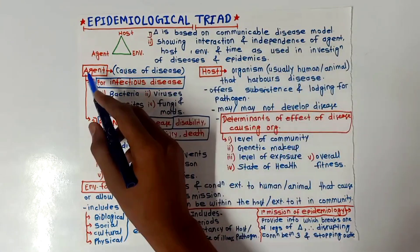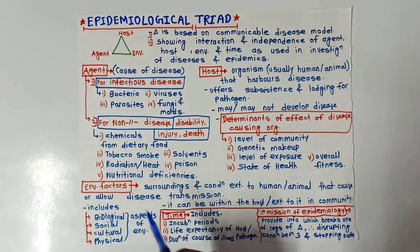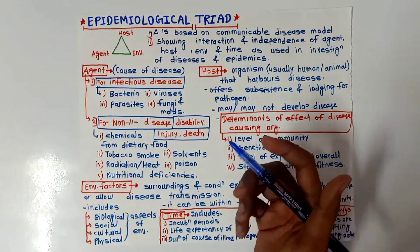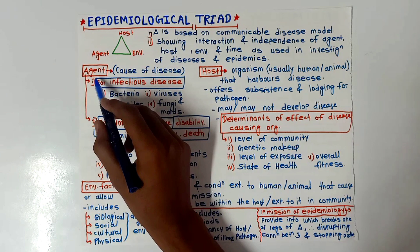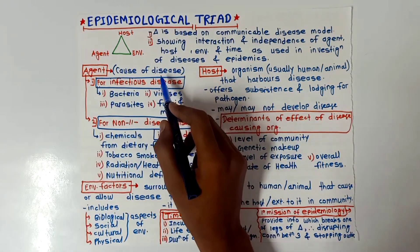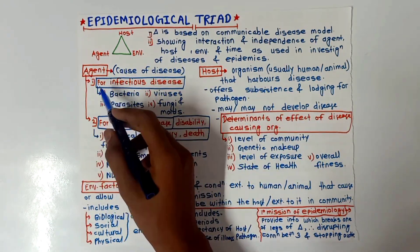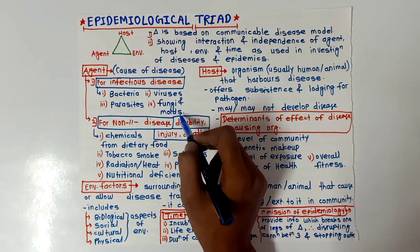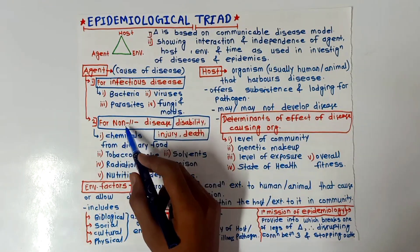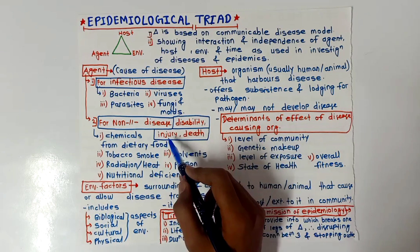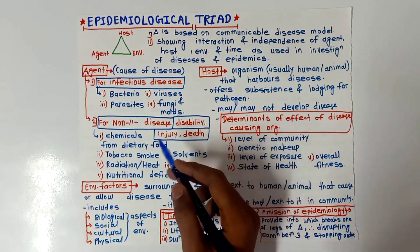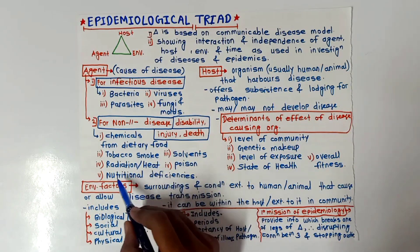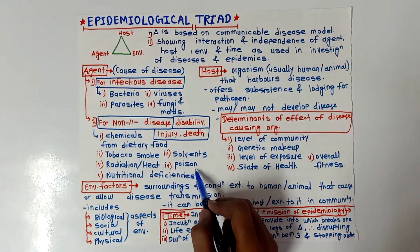We will now see these four factors — agent, host, environmental factors, and time — and lastly the primary mission of epidemiology. First, agent: agent is the cause of disease. Common agents for infectious diseases are bacteria, parasites, viruses, fungi, and molds. Common agents for non-infectious diseases, disability, or injury include chemicals from dietary food, tobacco smoke, radiation, heat, nutritional deficiencies, solvents, and poisons.